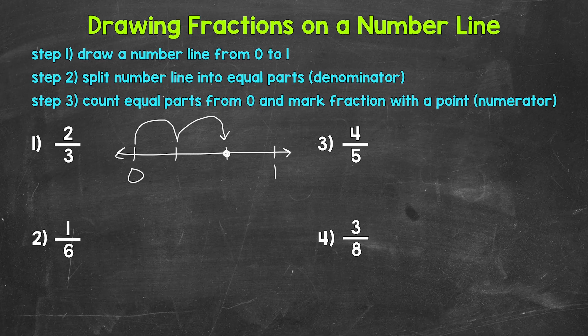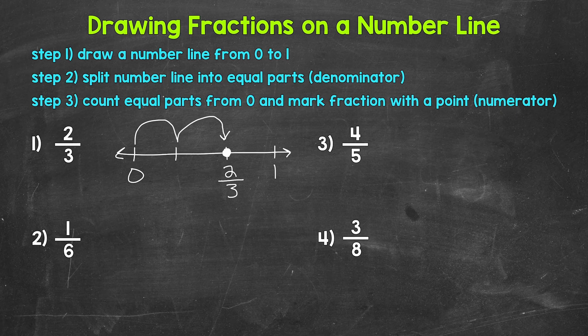So our point goes right here, and that's our fraction two-thirds. The distance between zero and one was divided into three equal parts — so thirds. Then we counted two out of those three equal parts and marked our fraction two-thirds. We went over two out of the three total parts. Let's move on to number two and try another one.